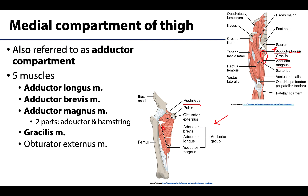The adductor magnus, as you might suspect, is the largest adductor muscle, and it's actually composed of two parts. There is the adductor part, which is the larger part and really the bulk of the adductor magnus. There is also another portion often referred to as the hamstring part, which is more closely associated in terms of both actions and innervation to the hamstring muscles in the posterior thigh. It's often hard to differentiate the two when looking at a dissection.